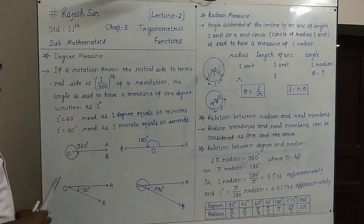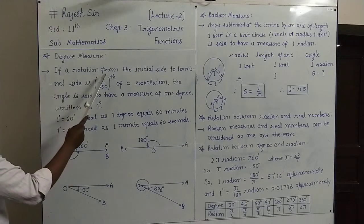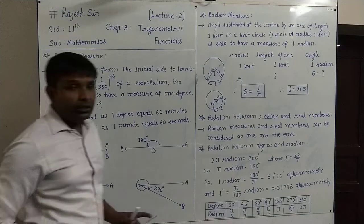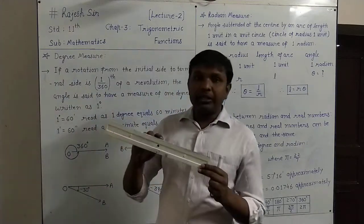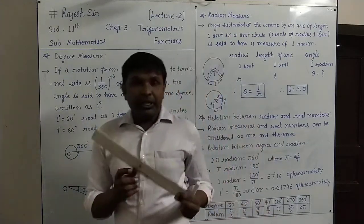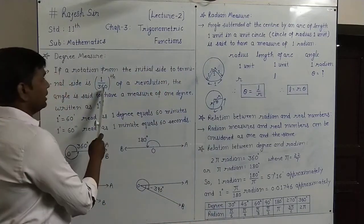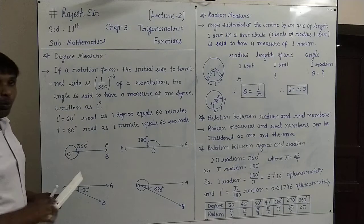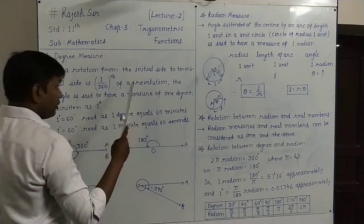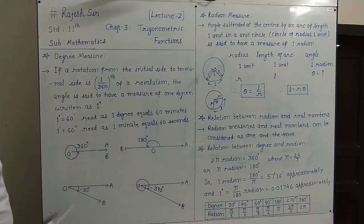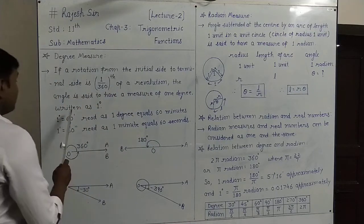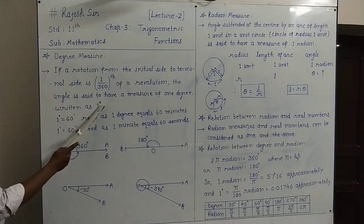First, the degree measure. What is degree measure? If a rotation from the initial side to the terminal side is 1 upon 360th part — you know that if we rotate and complete one circular part like this, it completes 360 degrees. And if we take only one part of 360 degrees, that one part of 360, of the whole revolution, is said to have a measure of 1 degree. So written as one degree — the degree sign is written on one.